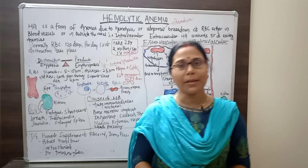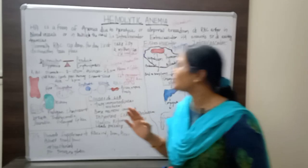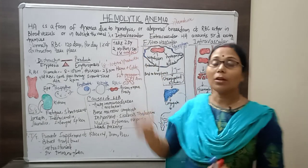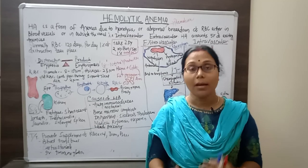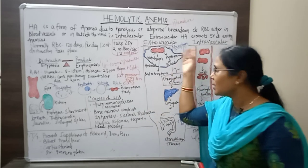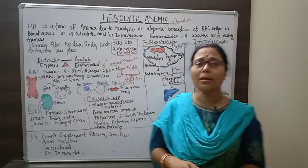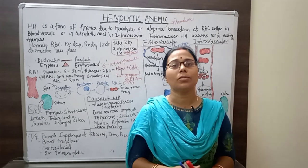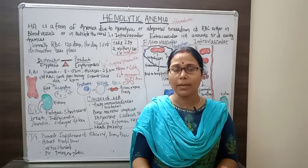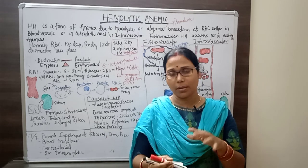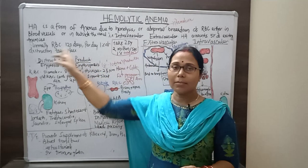Today's topic is hemolytic anemia. It is a form of anemia in which there is hemolysis — the abnormal breaking down of the red blood cells (RBCs). The name itself indicates this: 'hemo' refers to blood and 'lysis' means breaking down.